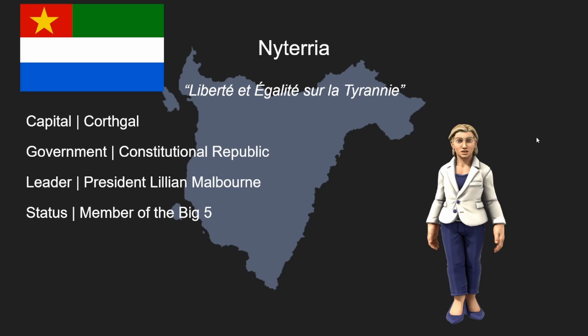Next up, we have Niteria. Niteria's motto translates from Niterian into 'liberty and equality over tyranny.' Niteria is a large democratic institution in Talmary — in fact, among the oldest democratic institutions ever in the world. The country is led by President Lillian Maliborne, as well as the Speaker of the Assembly, or the legislator, Victor Sulmore.